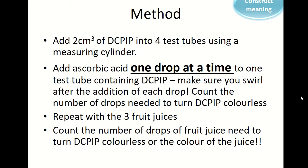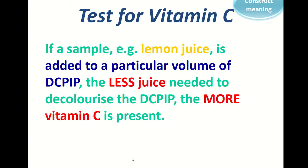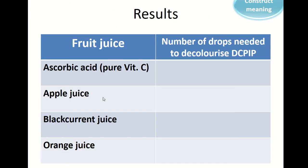We're going to count the number of drops needed, record that on the table for each juice, and then determine which juice has the most vitamin C. So the tests we're carrying out will be for ascorbic acid, which is pure vitamin C, apple juice, blackcurrant juice, and orange juice.